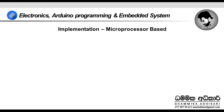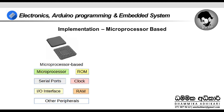The microprocessor-based embedded system has a processor. Programs are stored in ROM. Data communicates with the serial port. Clock and RAM, as well as input-output port, are part of the microprocessor-based embedded system.